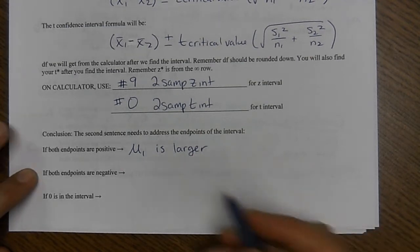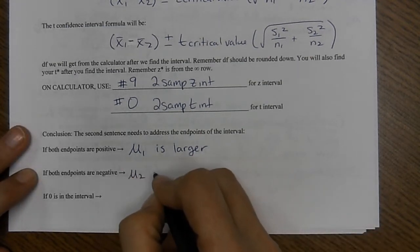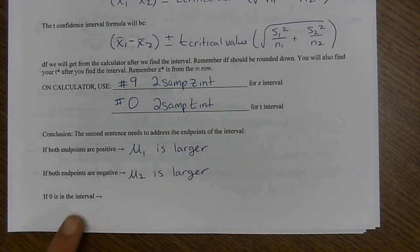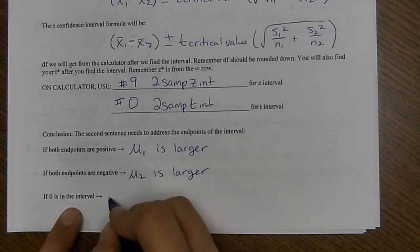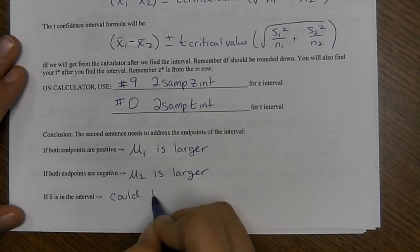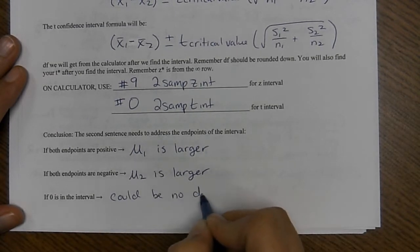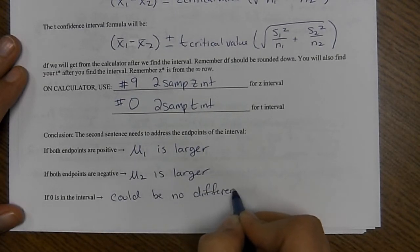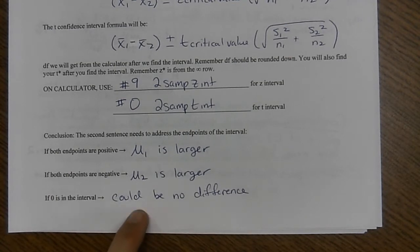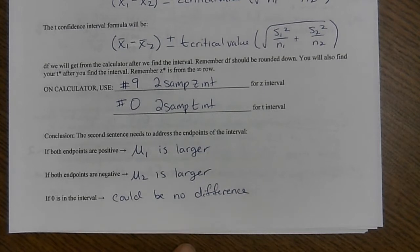So if both endpoints are positive, that means that mu one is larger. Think about when you subtract. You get two positive numbers, the first number is the bigger number. If both endpoints are negative, mu two is larger. If zero is in the interval, so you have a positive and a negative, this means that there could be no difference. If we were doing a hypothesis test, this would be the fail to reject because the means would be the same.